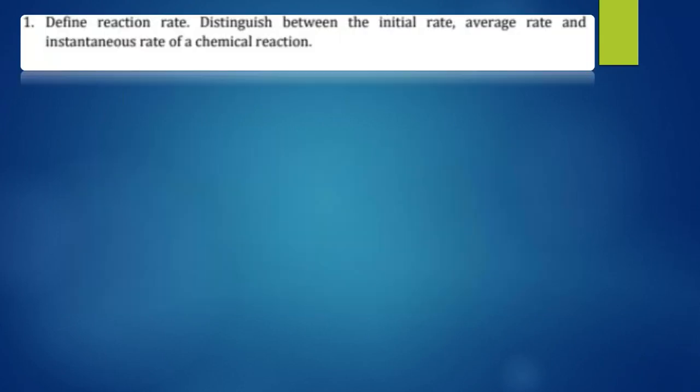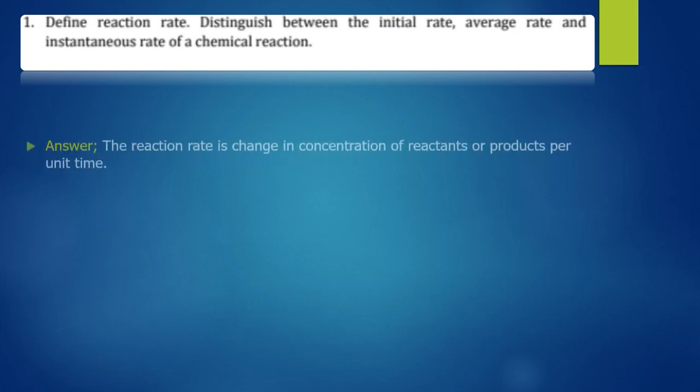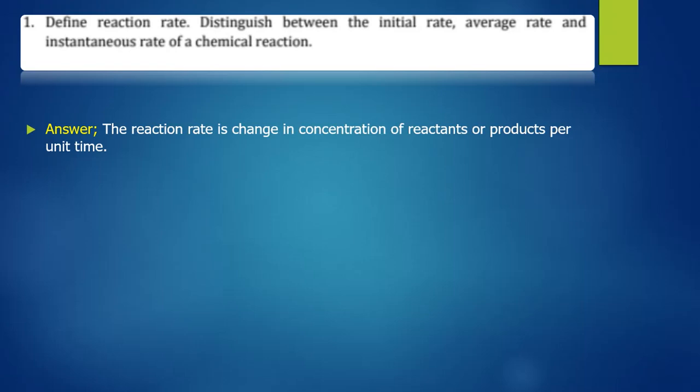Question one is saying: define reaction rate, and distinguish between the initial rate, average rate, and instantaneous rate of a chemical reaction. Before I define reaction rate, ensure you watch my first video on chemical kinetics where I define all of these. Reaction rate is the change in concentration of reactants or products per unit time.